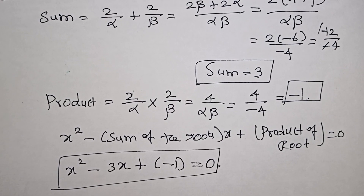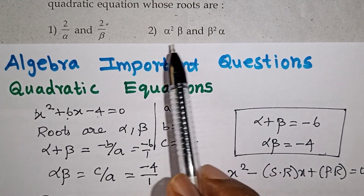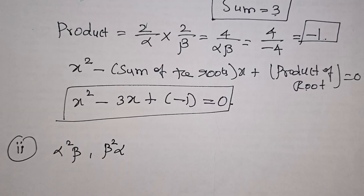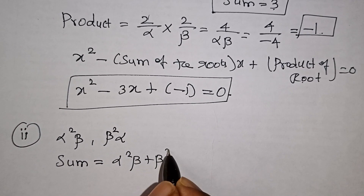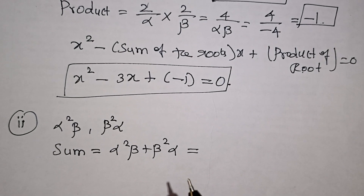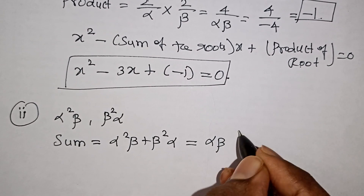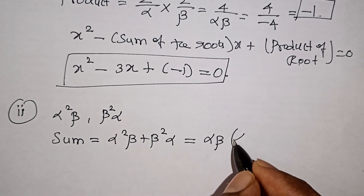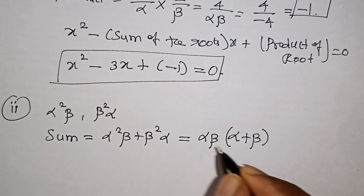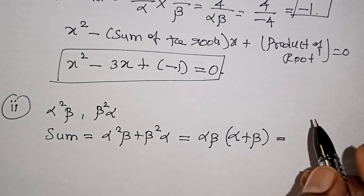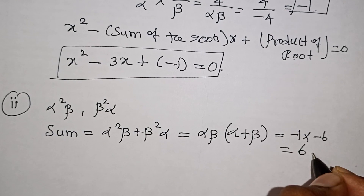Now the second part of the question: the roots are alpha²·beta and beta²·alpha. Taking alpha·beta as a common term, alpha²·beta + beta²·alpha = alpha·beta(alpha + beta). The alpha·beta value is minus 4, and alpha plus beta value is minus 6, so minus 4 × minus 6 = 6. So the sum of the new roots is 6.